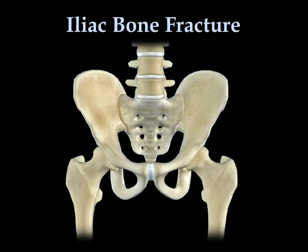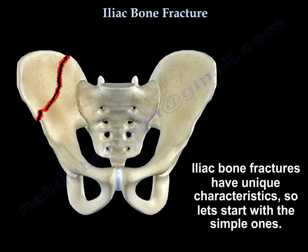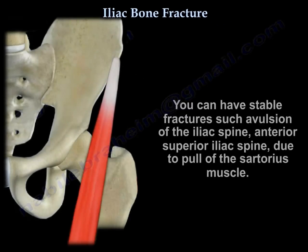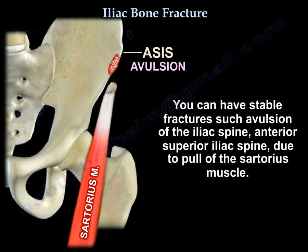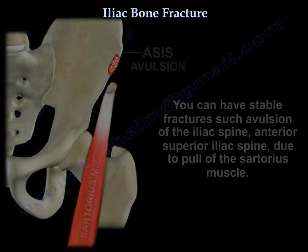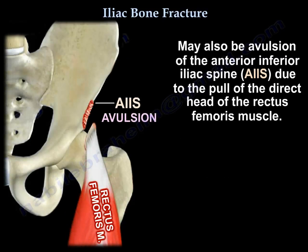Iliac bone fracture has unique characteristics, so we start with the simple ones. You can have stable fractures such as avulsion of the iliac spine, such as anterior superior iliac spine with the sartorius, or avulsion of the anterior inferior iliac spine due to the pull of the direct head of the rectus femoris.